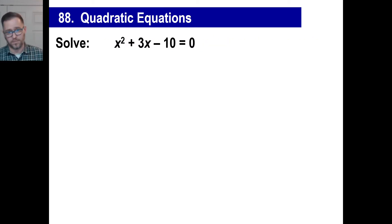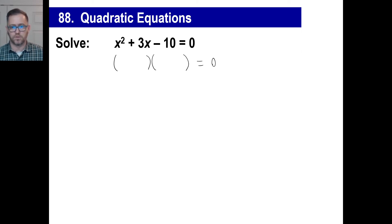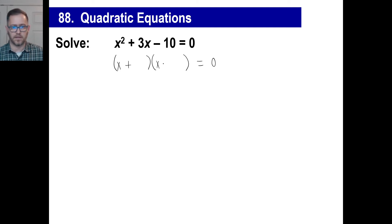This is a trinomial, and we know how to solve trinomials. They're going to make these so they're all solvable. So we're just going to write this whole thing over and then at the very end put equals zero. We've got two x's, and we need two numbers that multiply to give you a negative — so you know it's going to be a positive and a negative — and they add to give you 3. That's going to be positive 5 and negative 2.